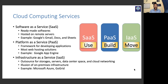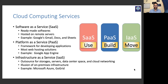Platform as a Service is basically for developers. It's used by developers to develop applications, and the service providers give you the platform for developing whatever you want. Infrastructure as a Service is a self-service model where they give you resources — if you're looking for storage, you get data centers; if you're looking for computation, you get GPUs. Basically, the vendors outsource storage, servers, data centers, space, and cloud networking.